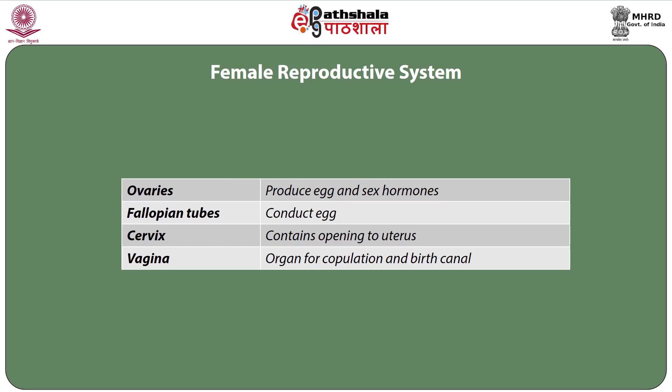The female reproductive organs are the ovaries, the fallopian tubes, uterus or the womb, cervix, and vagina. The function of the ovaries is to produce eggs and sex hormones. Fallopian tubes conduct the egg. The uterus or the womb is the location for the developing fetus. The cervix contains an opening to the uterus. The vagina is the organ of copulation and birth canal.